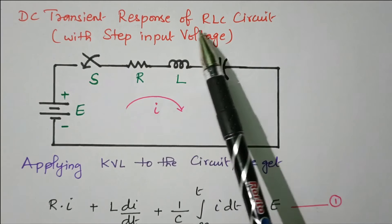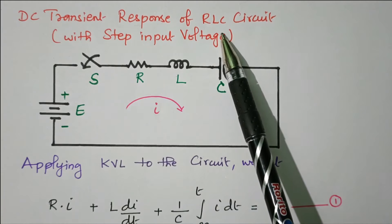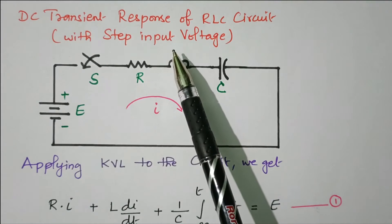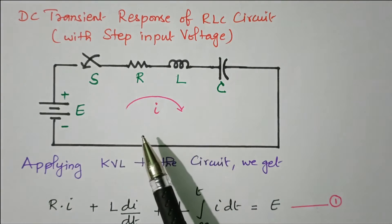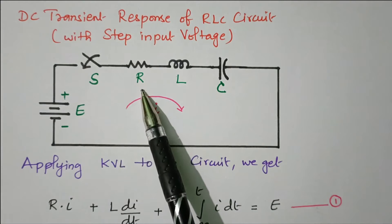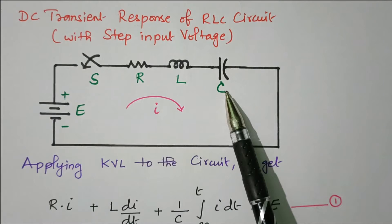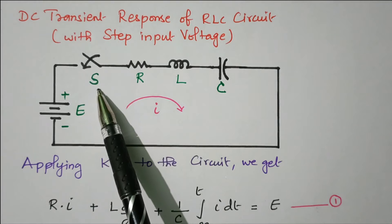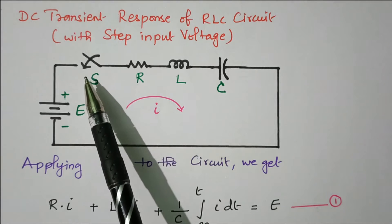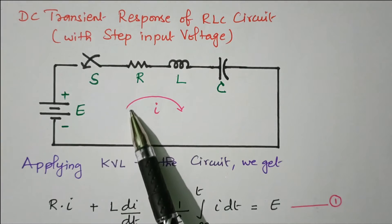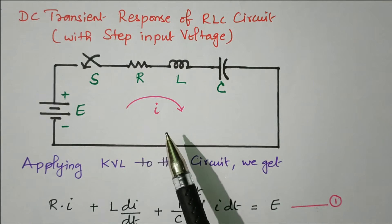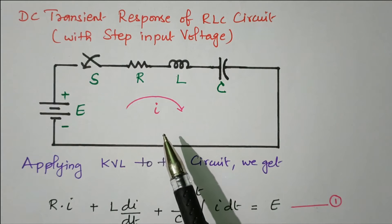Now we will go to the topic. In an RLC circuit, resistor, inductor, and capacitor are connected in series. We are going to see the DC transient response with the step input. Let us consider the circuit — resistor, inductance, capacitance connected in series, energized by DC voltage source E. This is the switch S; we can control the supply voltage by closing and opening the switch. This is the current direction. In order to analyze the transient response, we need to apply Kirchhoff's voltage law.